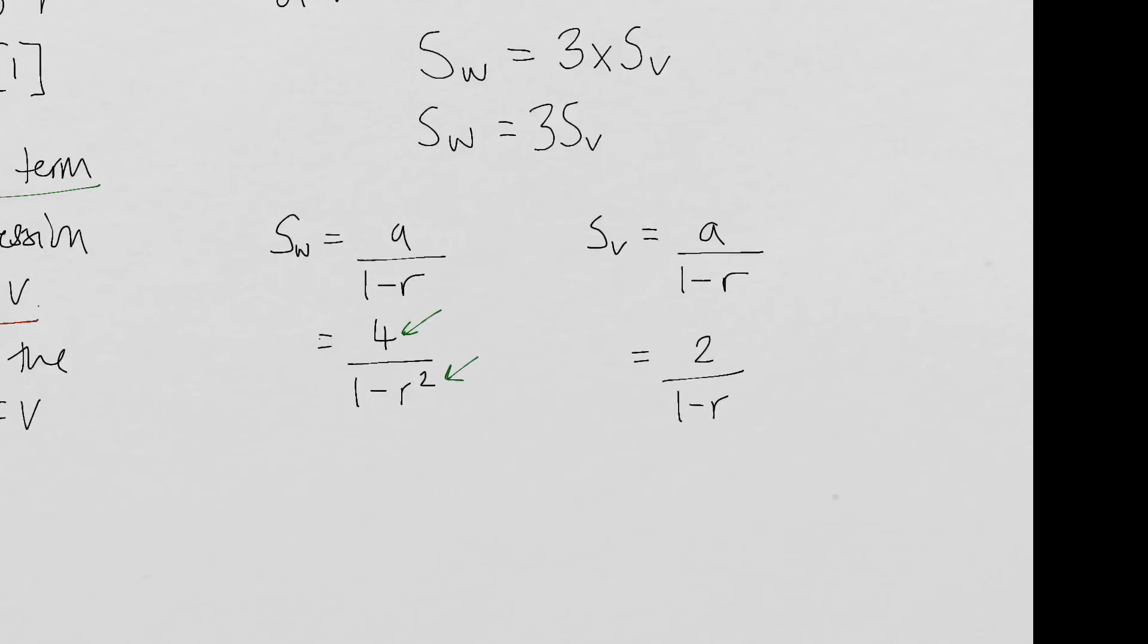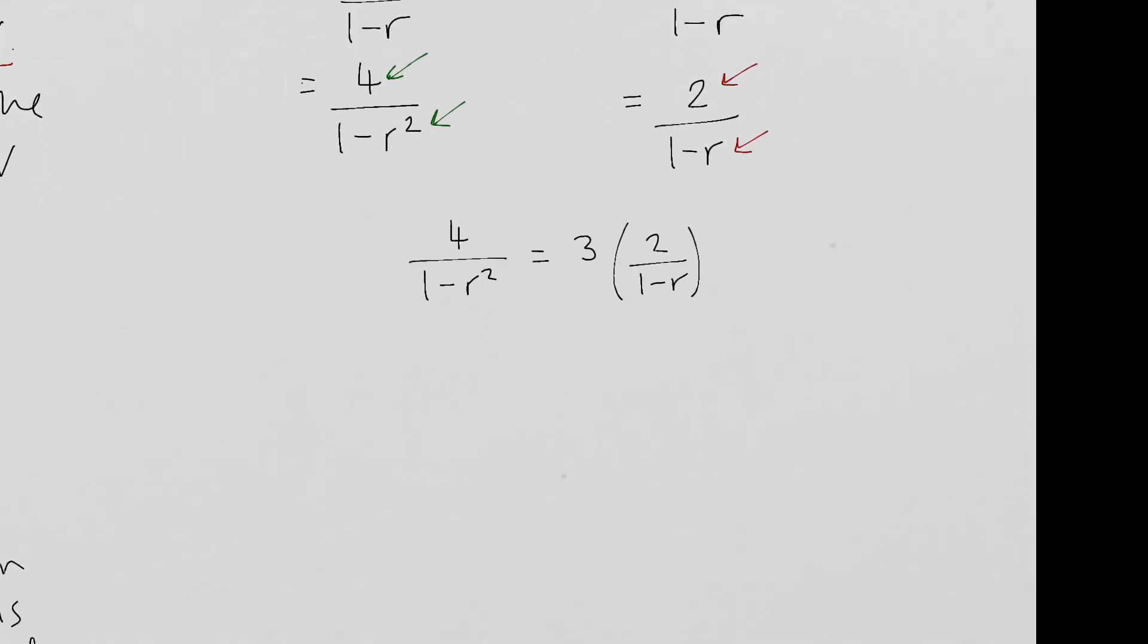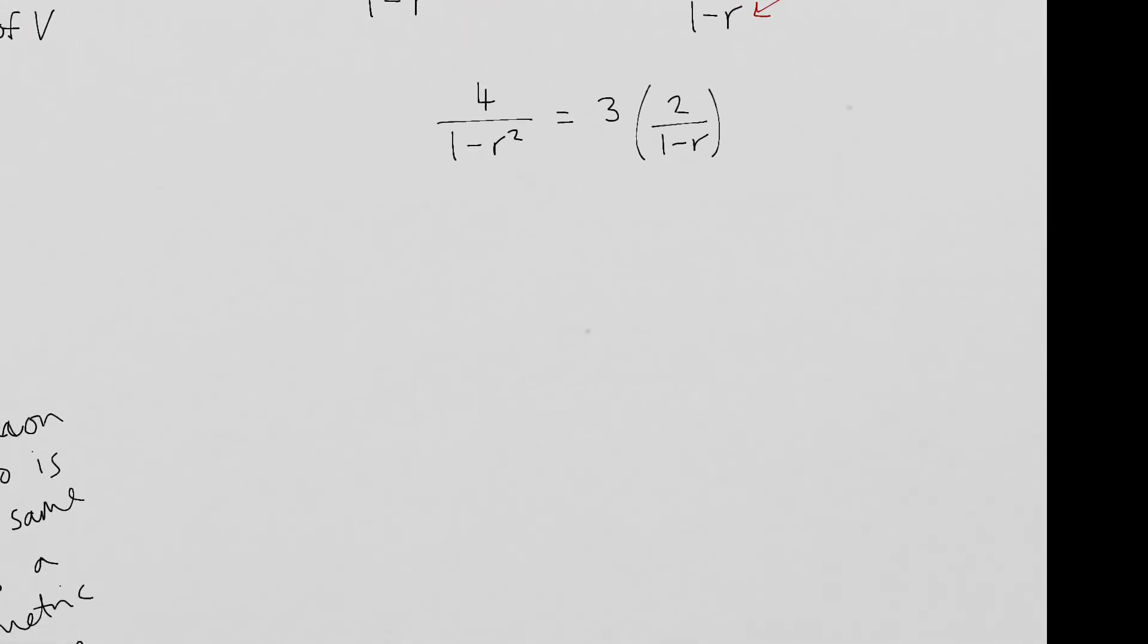So that's R squared on the second one, V. My first term is two and my common ratio is R. So that's what I've got there. So putting those into an equation to solve now, I've got four over one minus R squared is equal to three times by two over one minus R. How you go about solving this now is up to you. Pause it, have a go and I'll show you my solution when you unpause it.